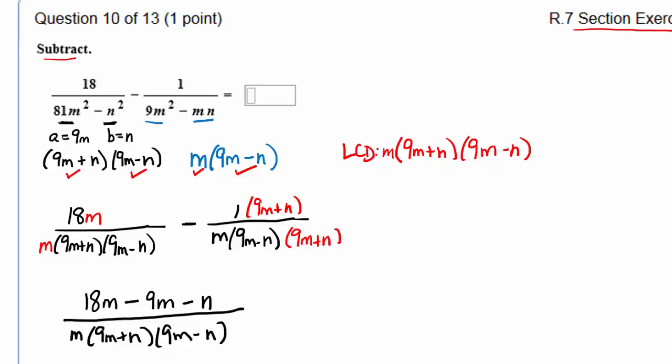Maybe simplify a bit. What can we combine there? Yeah, we can combine the 18m and the negative 9m, so that's going to give us 9m minus n over m times 9m plus n times 9m minus n.